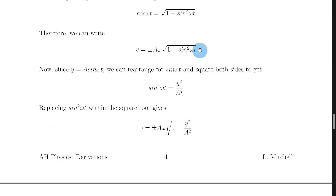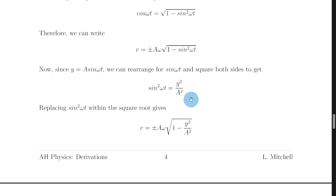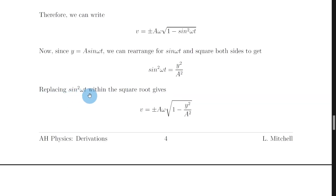Now we want to get rid of the sine squared omega t term inside the square root. Thinking about our displacement expression y equals a sine omega t, we can rearrange this: dividing both sides by a gives sine omega t equals y over a, and squaring both sides gives sine squared omega t equals y squared over a squared. We can now replace the sine squared omega t term within the square root with y squared over a squared, giving v equals plus or minus a omega times the square root of 1 minus y squared over a squared.